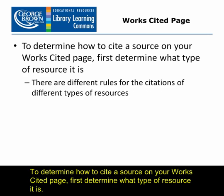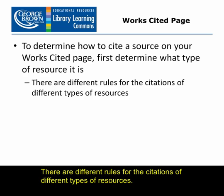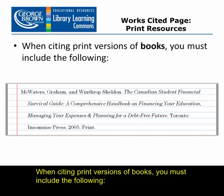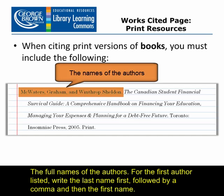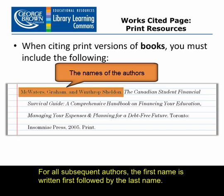To determine how to cite a source on your works cited page, first determine what type of resource it is. There are different rules for the citations of different types of resources. When citing print versions of books, you must include the following: the full names of the authors. For the first author listed, write the last name first, followed by a comma, and then the first name. For all subsequent authors, the first name is written first, followed by the last name.